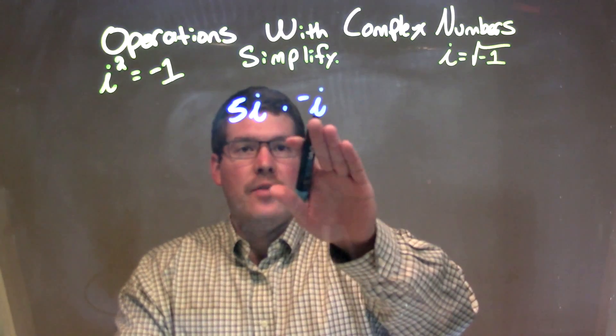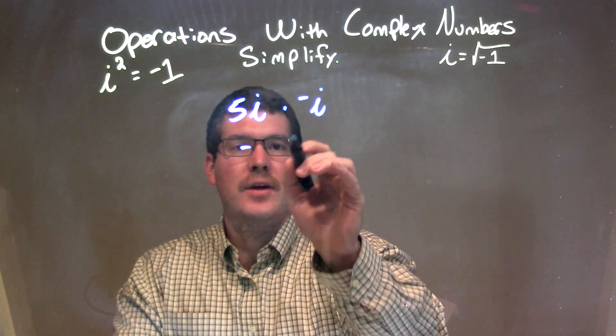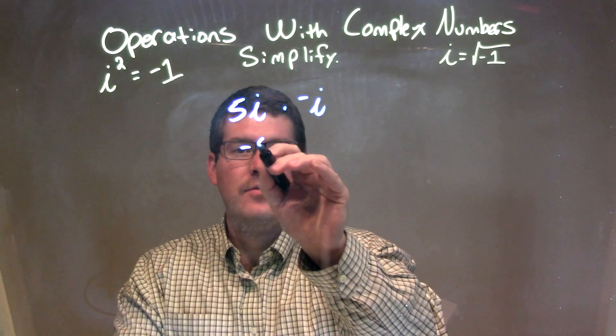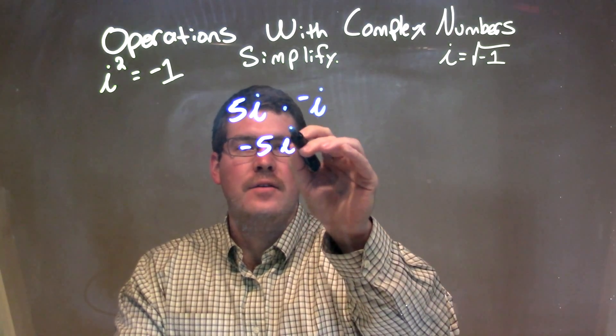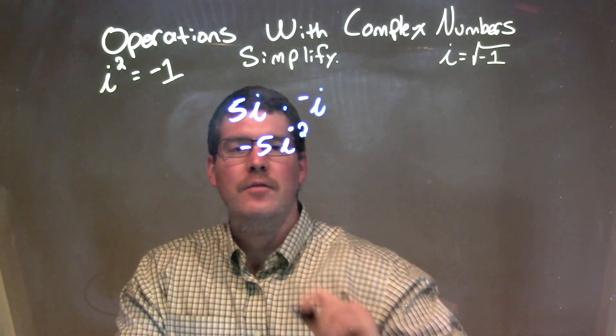We multiply these together. Well, we have a negative, right? 5i times negative i is negative 5i squared. So we have negative 5i squared.